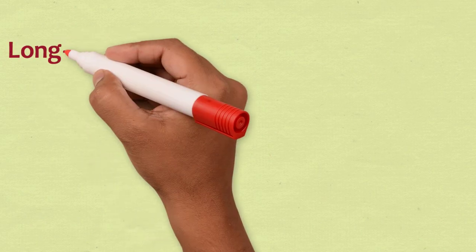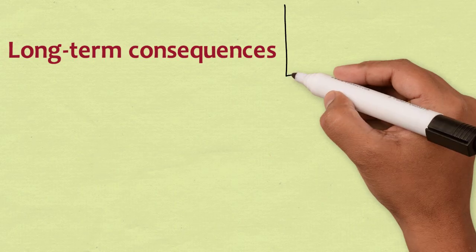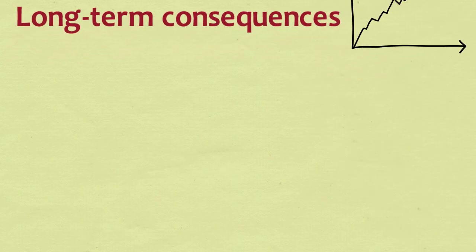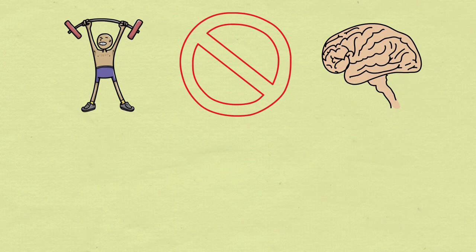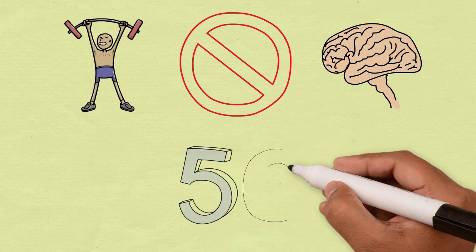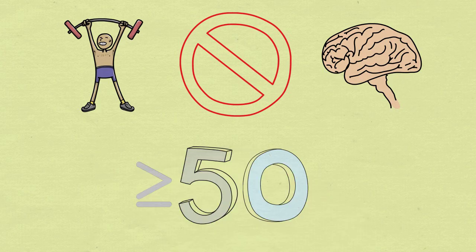One study investigating the long-term consequences of sepsis examined whether sepsis is associated with an increased risk of physical and cognitive impairment. A group of sepsis survivors over the age of 50 were followed for 8 years after having severe sepsis.